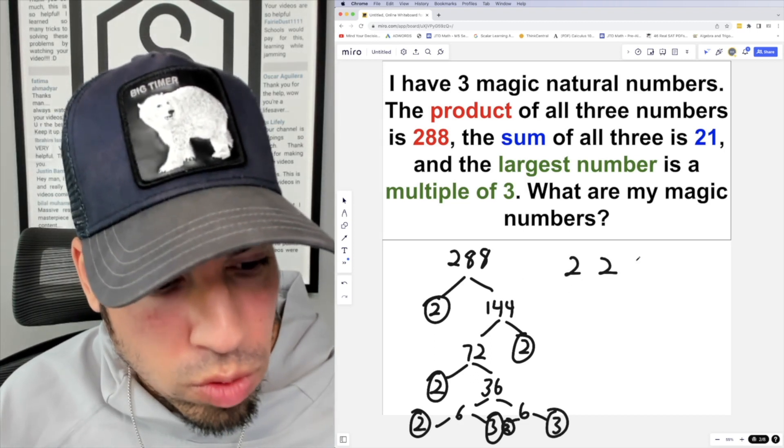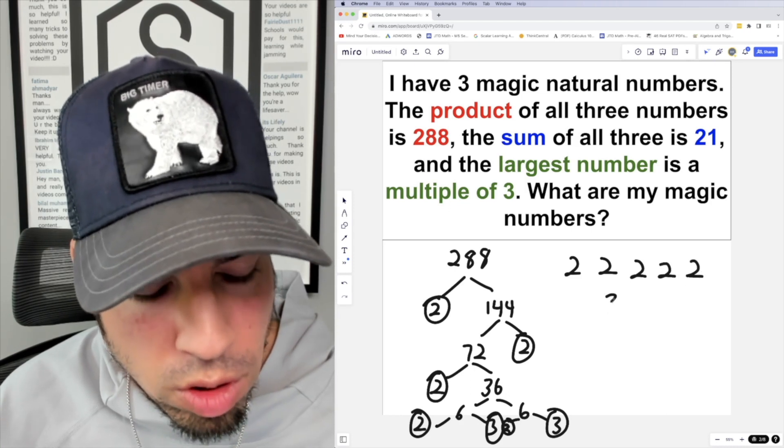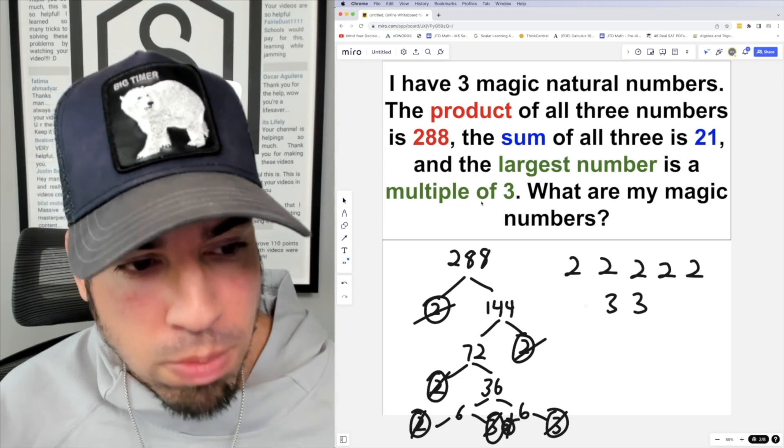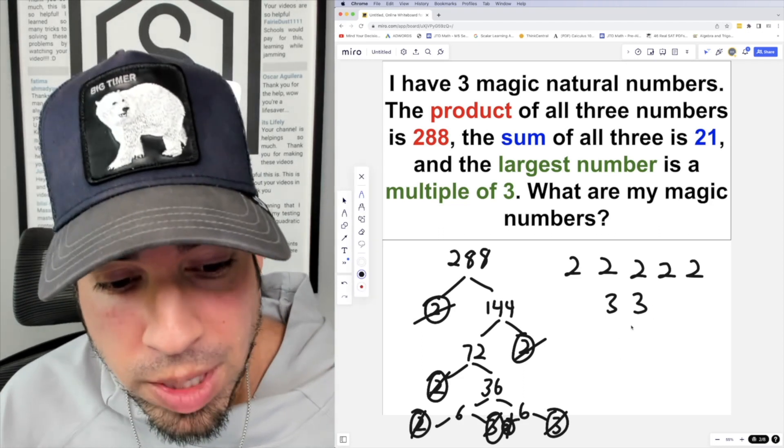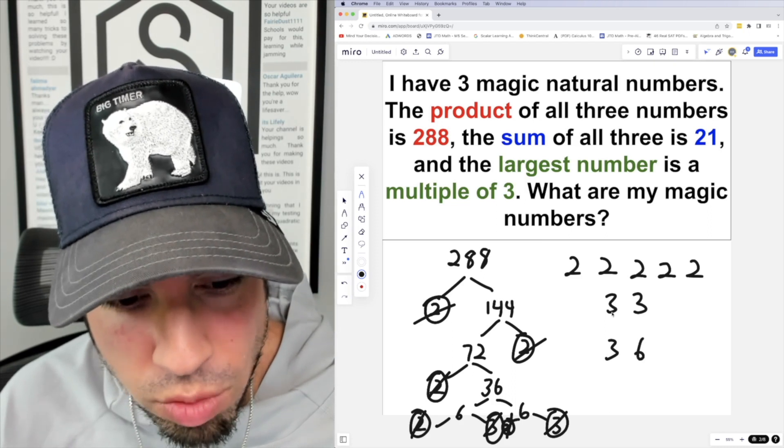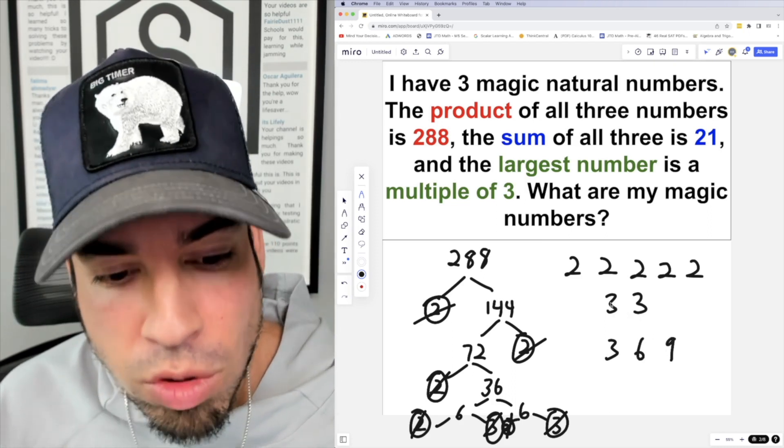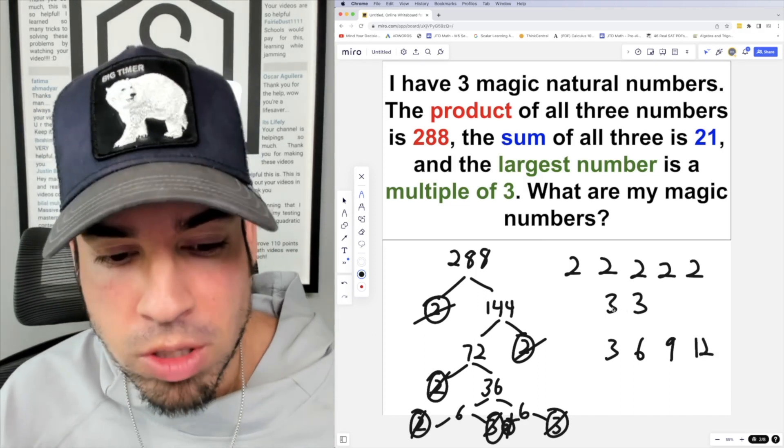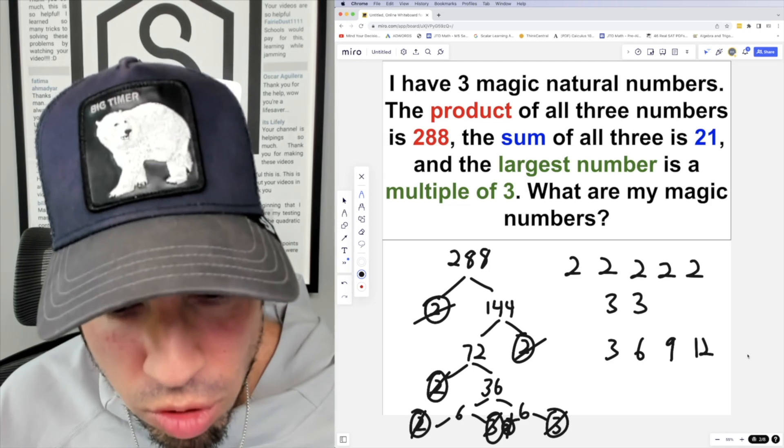So now we have our prime factors which are 2, 2, 2, 2, 2, 3, and 3. Now first of all, it says the largest number is a multiple of three. So knowing that it's a multiple of three, it could be anything like 3. It could also be 3 times 2 which is 6, 3 times 3 which is 9, 3 times 2 times 2 which is 12. You see, I'm just using the factors to build numbers. It could also be 3 times 3 times 2 which is 18.